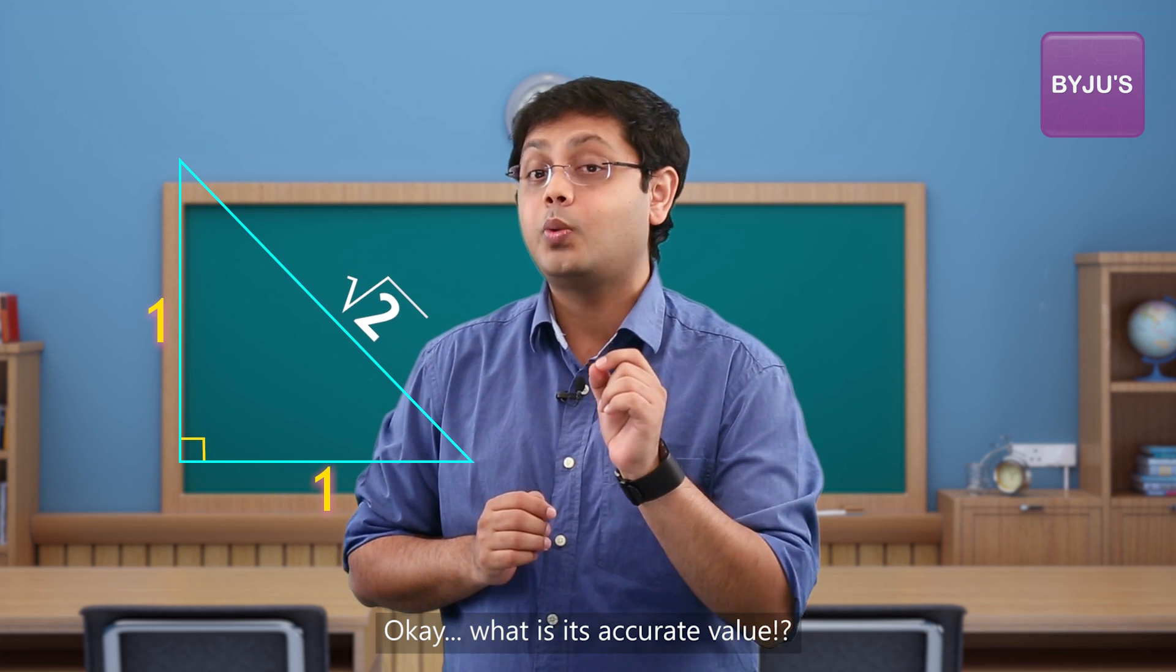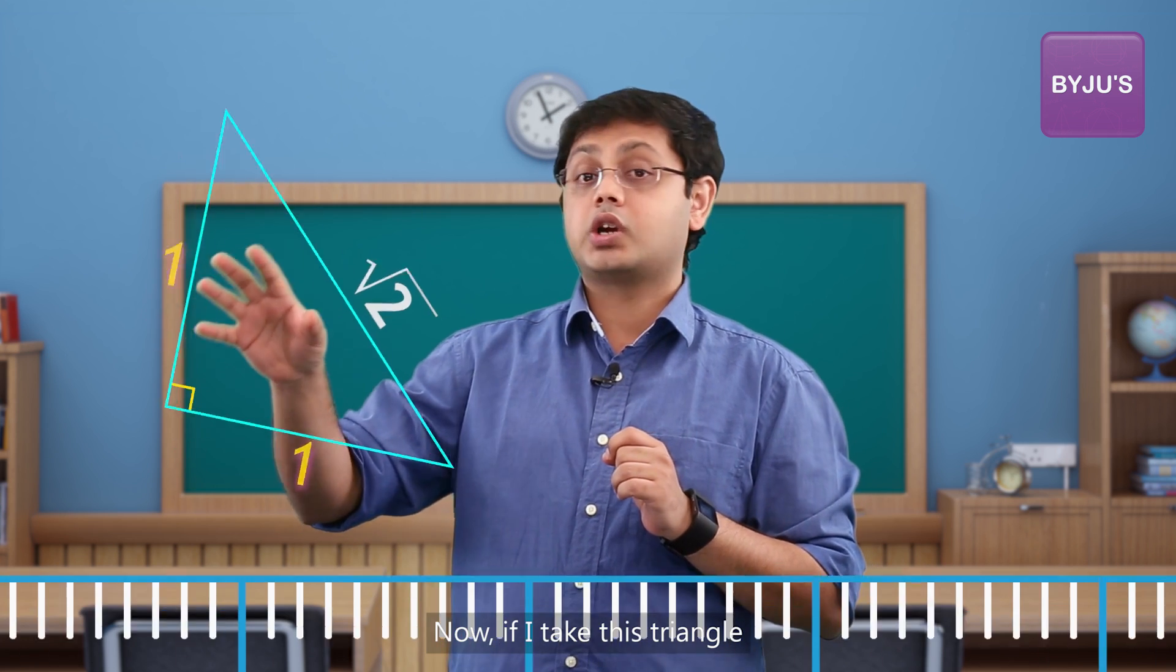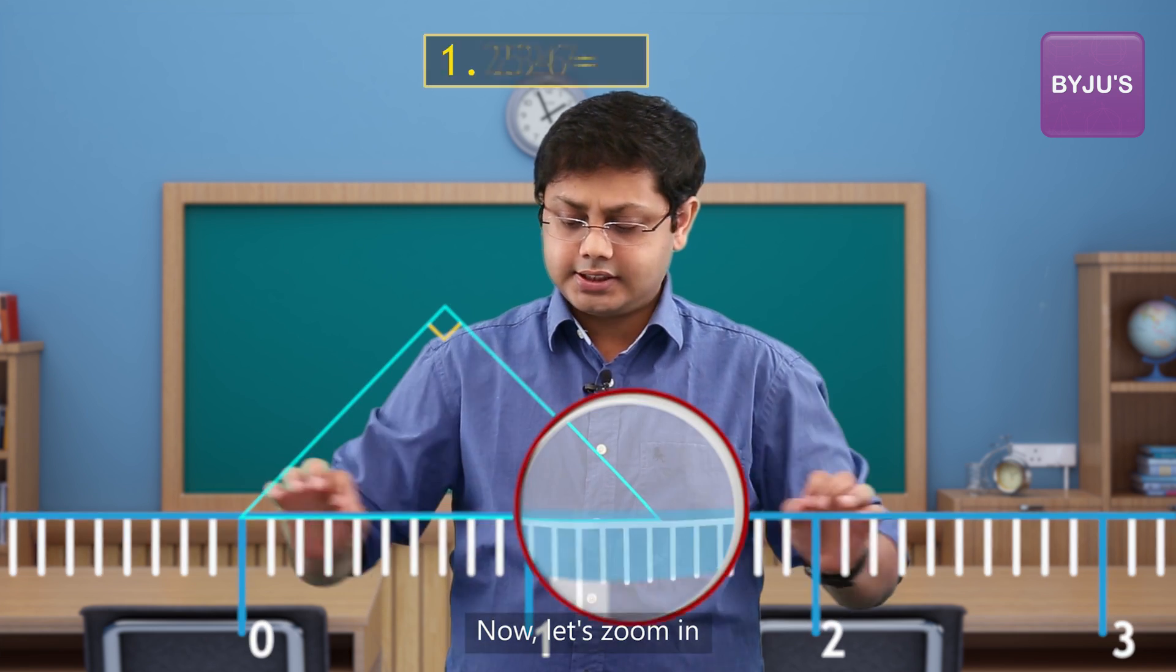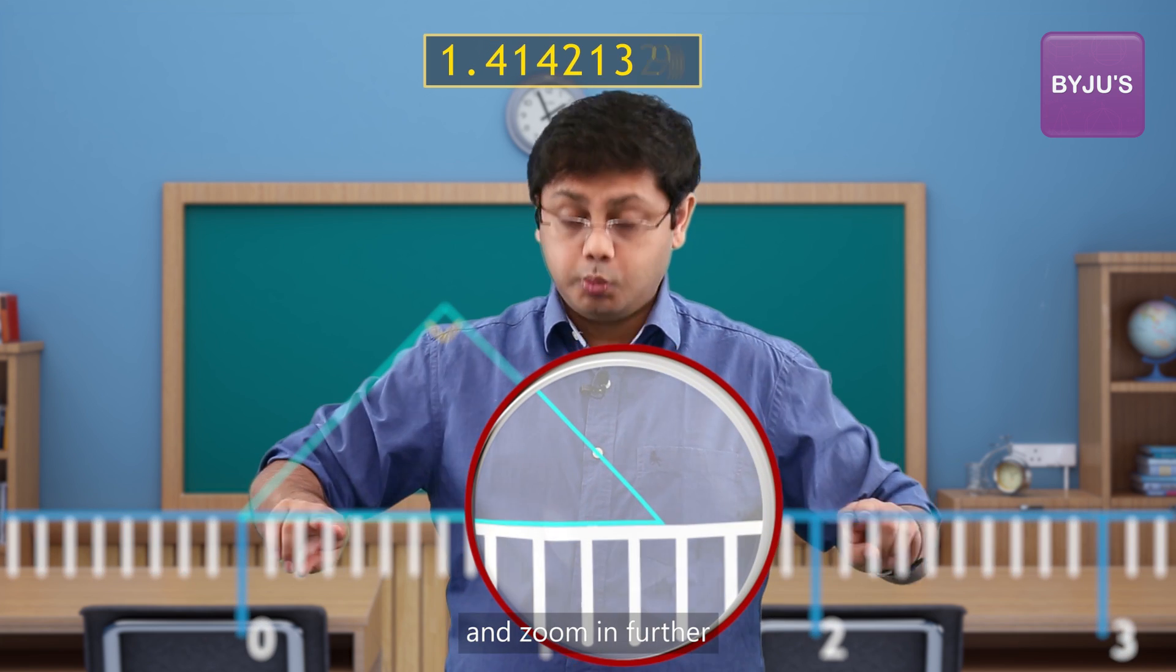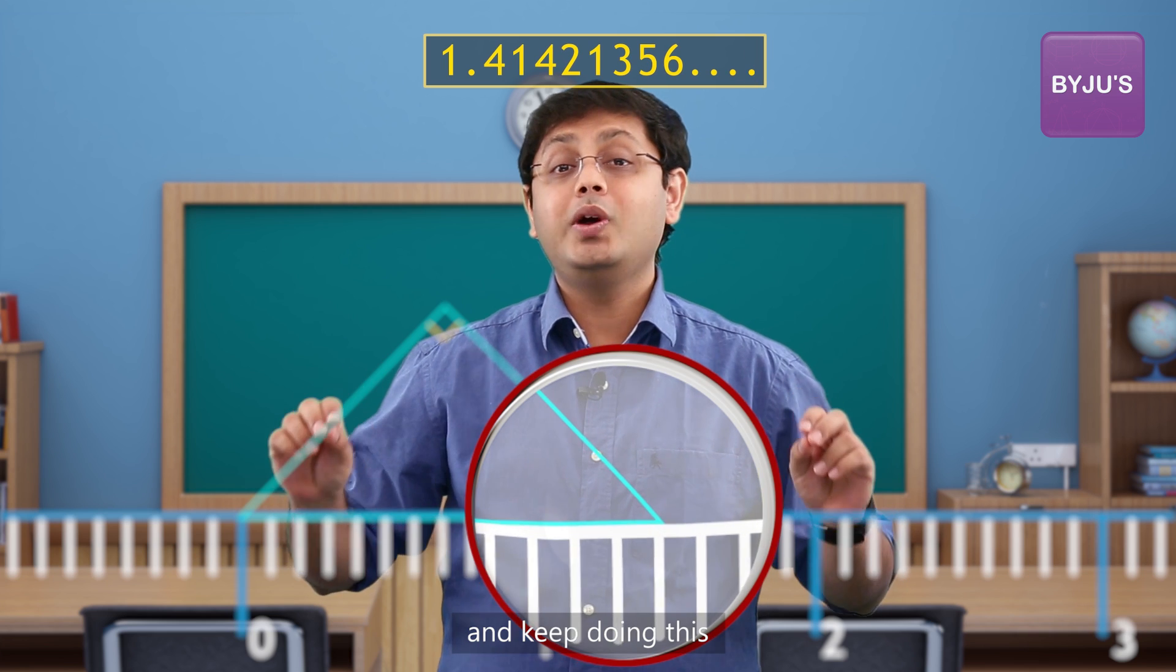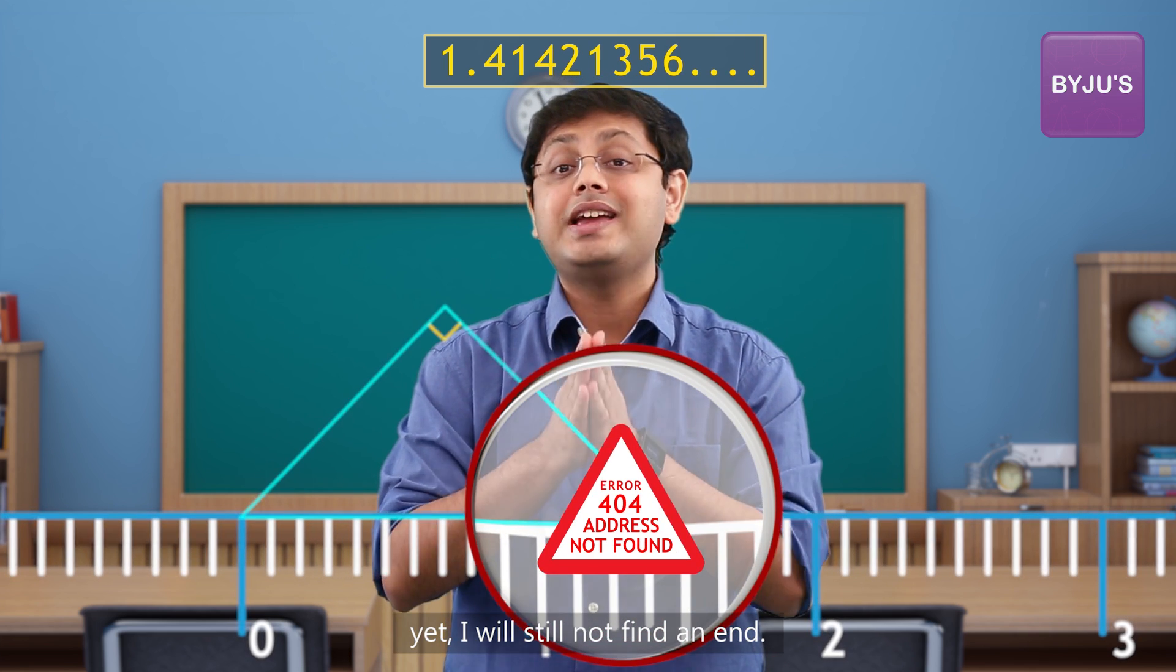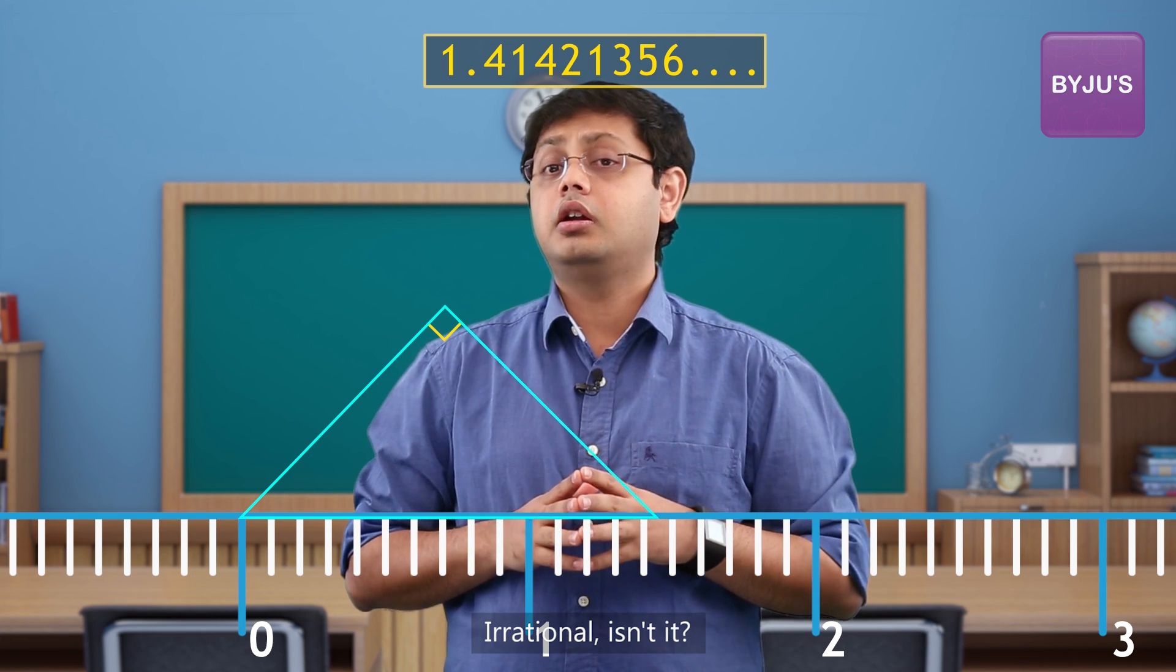Okay, what is its accurate value? Now if I take this triangle and put it on this number line, let's zoom in and zoom in further and keep doing this many times, yet I will still not find an end. Irrational, isn't it?